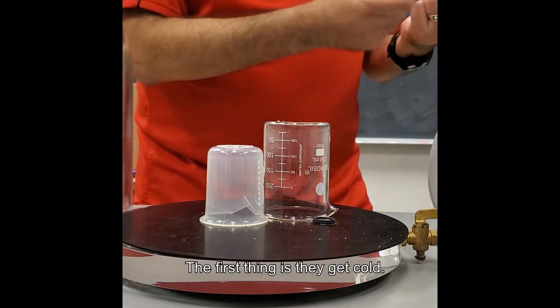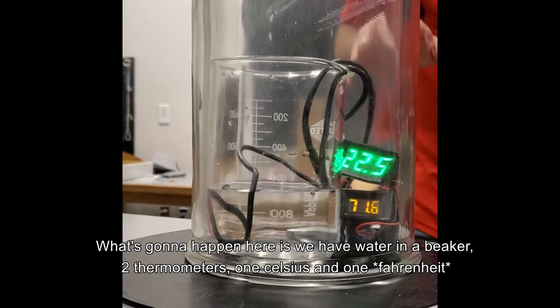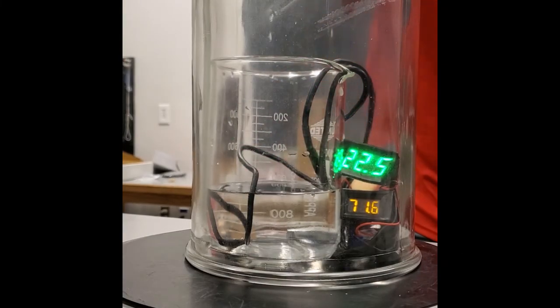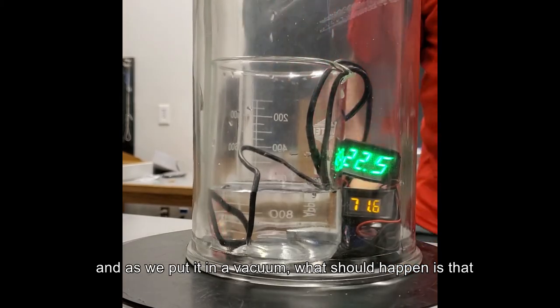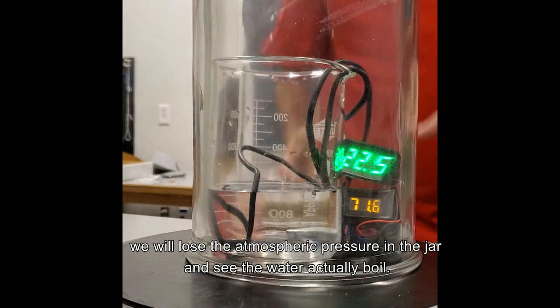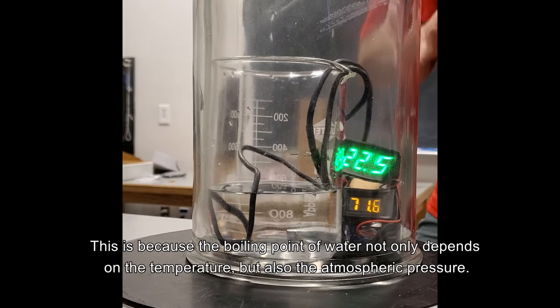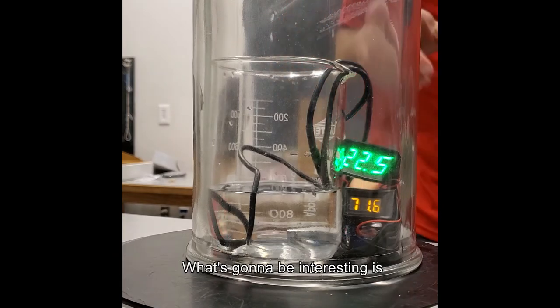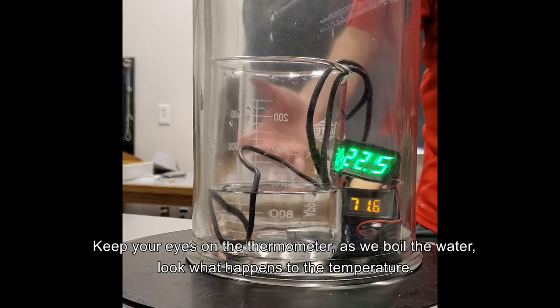Well, the first thing is they get cold. What's going to happen here is we've got water in the beaker, two thermometers, one Celsius, one centigrade. And as we put it under a vacuum, what should happen is we remove the atmospheric pressure in the jar, you will see the water actually boil, because the boiling point of water depends not only on the temperature but also the atmospheric pressure. But what's going to be interesting is if you keep your eye on the thermometers, as we boil the water, look what happens to the temperature.